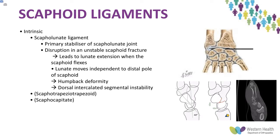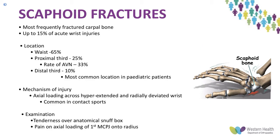The most important intrinsic ligament is the scapholunate ligament, the primary stabilizer of the scapholunate joint. Disruption of this in an unstable scaphoid fracture can lead to lunate extension when the scaphoid flexes — the lunate moves independently of the distal pole of the scaphoid. This leads to a humpback deformity as well as dorsal intercalated segmental instability, or DISI.